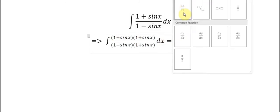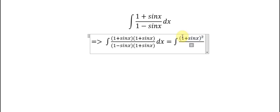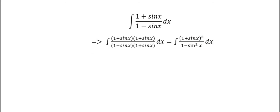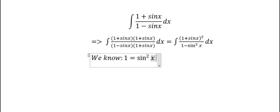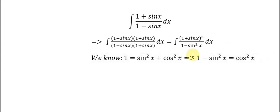The numerator becomes (1 + sin s) squared. The denominator becomes (1 - sin²s). We know that 1 = sin²s + cos²s, so 1 - sin²s = cos²s. We convert the denominator to cos²s.